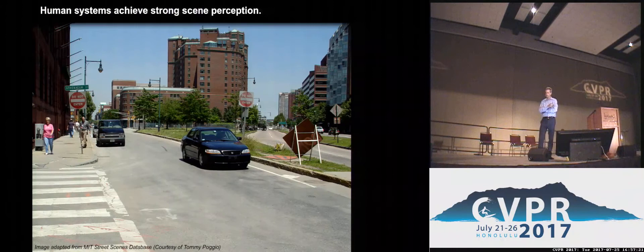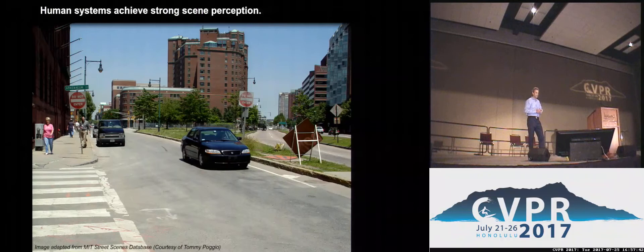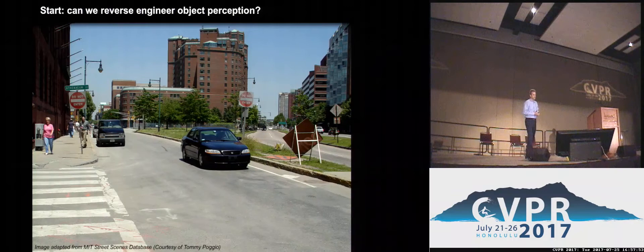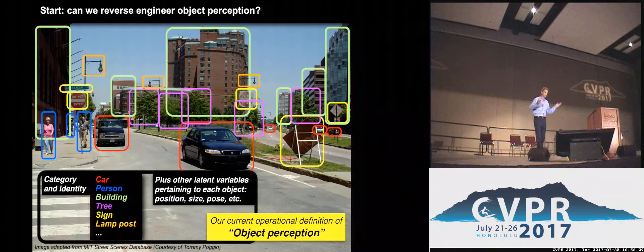Our problem is that humans have what we call strong scene perception — when you look at a scene, you can identify objects like cars, buildings, and signs, but also other latent content like the pose and position of cars, people, and safe navigable paths. We're working on a building block of that which I call object perception. Our goal is to reverse engineer object perception, which we operationalize as the ability to identify, categorize, and determine latent content such as position, size, and pose.